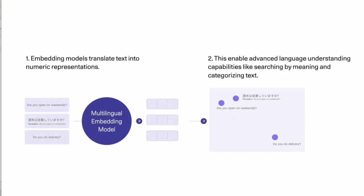Text embeddings are a central component in machine language understanding. They are numeric representations of text, be it a document, an email, or even a sentence. An embedding model translates text into a list of numbers that capture its meaning. A multilingual embedding model is able to do that well for many languages.